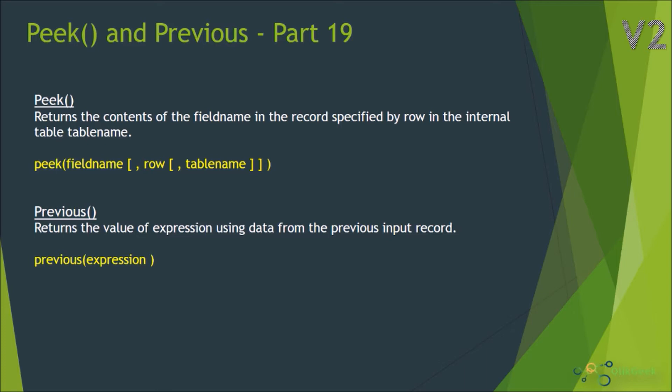Let's see the definition of Peek. It returns the content of the field name in the record specified by the row in the internal table or table name.